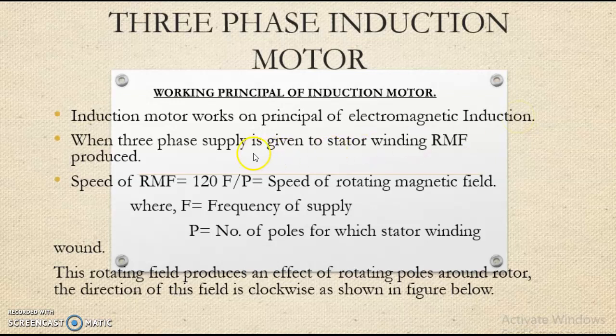When three-phase supply is given to the stator winding, a rotating magnetic field is produced. The speed of this rotating magnetic field RMF equals 120F/P, where F is the frequency of supply and P is the number of poles.